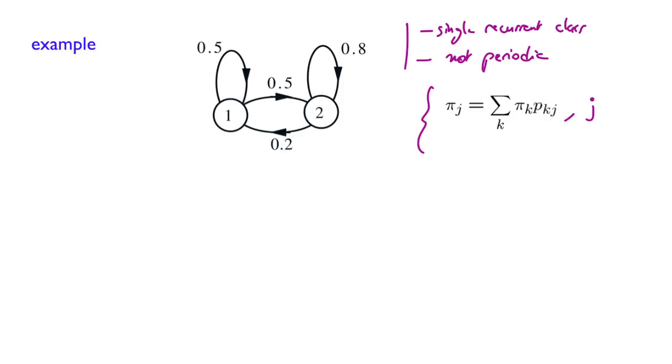And the steady state probabilities from 1 to m, in that case, for us, m equals 2. So let us write this system and solve the system of linear equations for this example here.